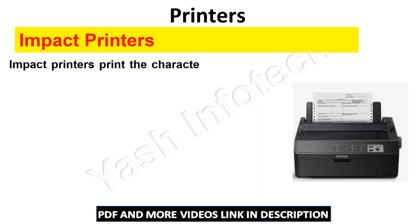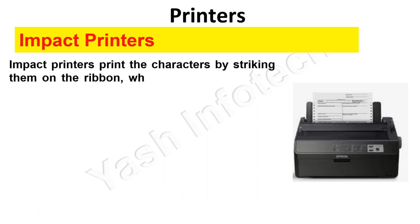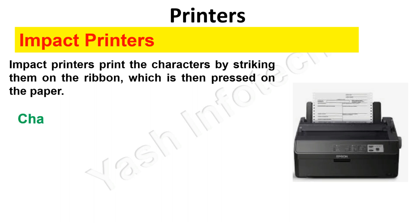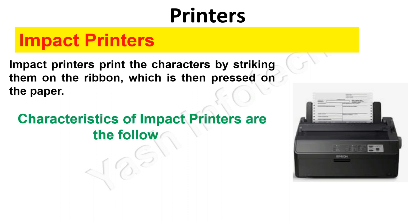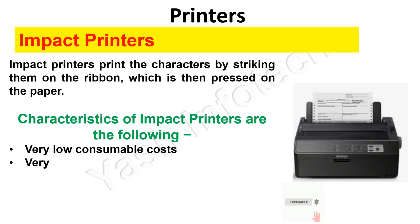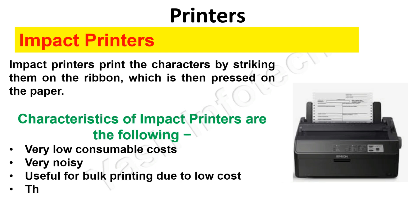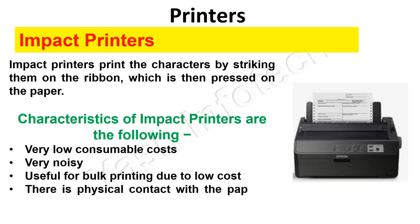Impact printers print the characters by striking them on the ribbon, which is then pressed on the paper. Characteristics of impact printers are: very low consumable cost, very noisy, useful for bulk printing due to low cost, and there is physical contact with the paper to produce an image.